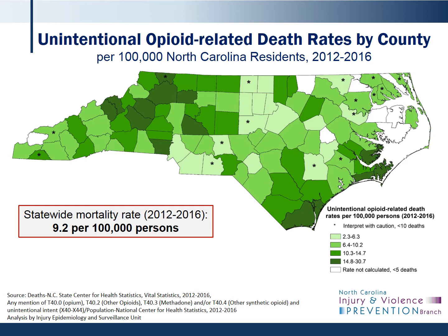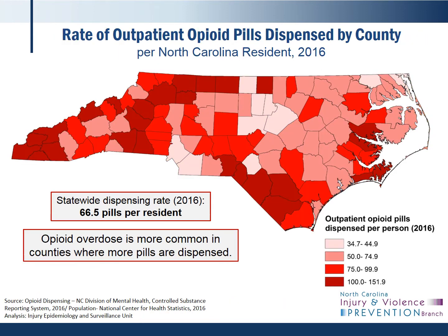Like the medication and drug map shown earlier, this map shades the counties of North Carolina based on their respective unintentional opioid overdose death rate. The statewide rate of unintentional opioid-related overdose deaths from 2012 to 2016 was 9.2 per 100,000 persons. Again, these deaths are a subset of the overall drug and medication overdose deaths. This map shows 2016 data from the North Carolina Controlled Substances Reporting System, or CSRS, on number of outpatient opioid pills dispensed. Darker counties had higher rates of outpatient opioid dispensing. The rates of opioid pills dispensed are per individual resident. The overall statewide rate for 2016 was 66.5 pills per resident. Previous analyses in North Carolina have shown that prescription opioid overdose deaths are more common in counties where more opioids are dispensed.